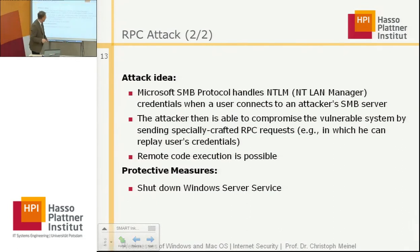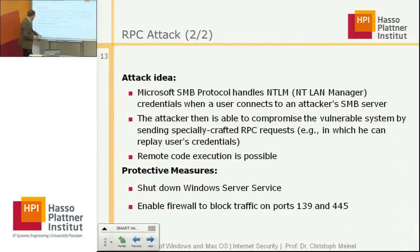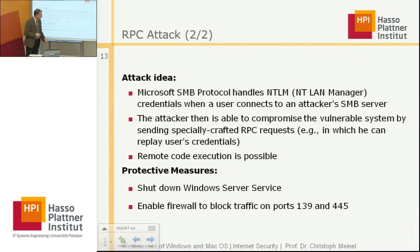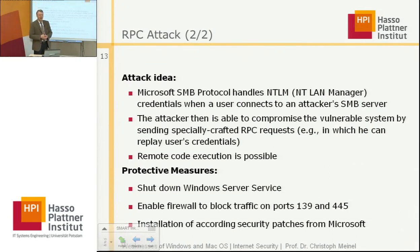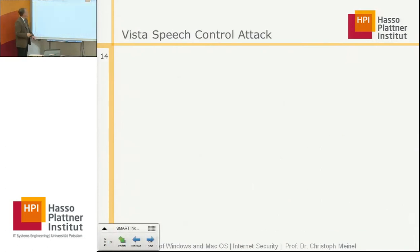Protective measures against this RPC attack are: shut down Windows Server Service, enable a firewall to block traffic particularly on ports 139 and 445, and install corresponding security patches available from Microsoft. This concludes the two SMB attacks I wanted to introduce.